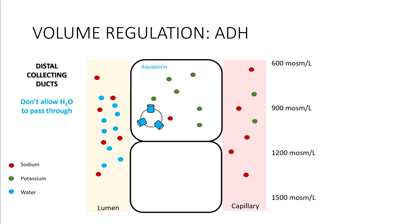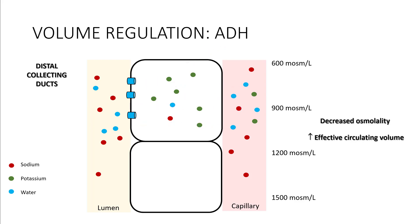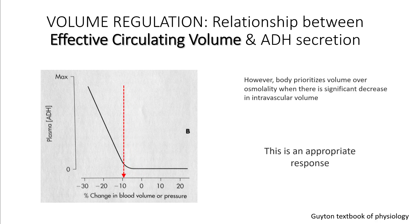ADH works in the distal collecting ducts, where they don't allow free water to pass through normally. The only way water can pass through is via aquaporin channels, which are stimulated by ADH. Once ADH is present, aquaporin channels are exposed on the luminal side, allowing water to pass through down the osmotic gradient. This results in decreased osmolality and increased effective circulating volume. Hypovolemia is a less sensitive stimulus for ADH release than osmolality, so as blood volume drops the body will prioritize volume over osmolality when there is a significant decrease in intravascular volume.